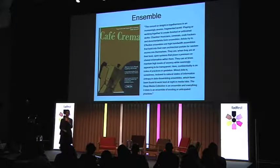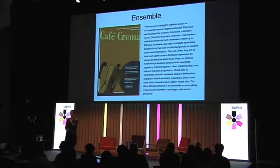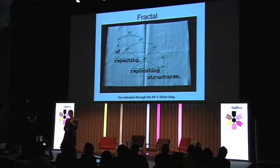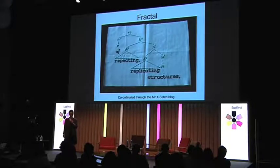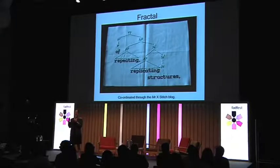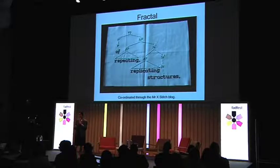Ensemble was stitched in a café in New Cross — I teach on the MFA in Curating at Goldsmiths — and it's nearly complete. Fractal has been stitched through the Mr. X Stitch blog, run by Jamie Chalmers who calls himself a Man Broiderer. Someone stitched a decision-making planning tree, which is actually quite linear and not very fractal. But some people have really close-read the text and tried to illustrate, expand on, or play around with the concepts in their design.